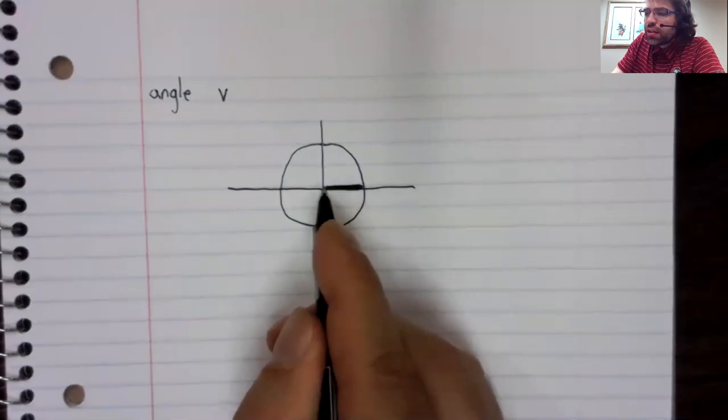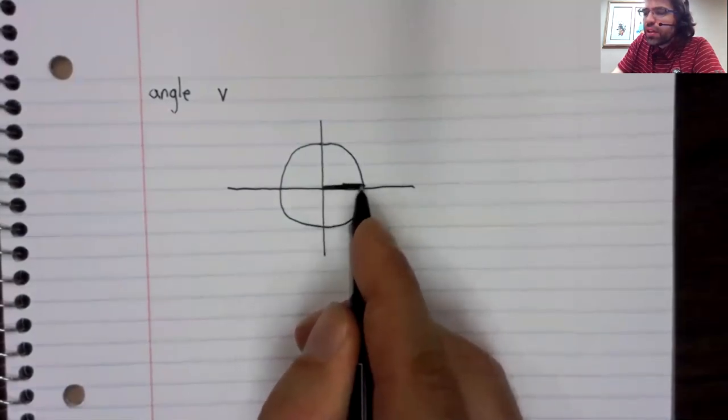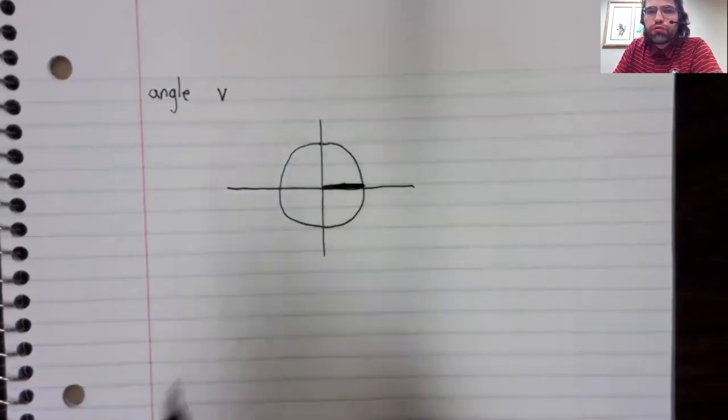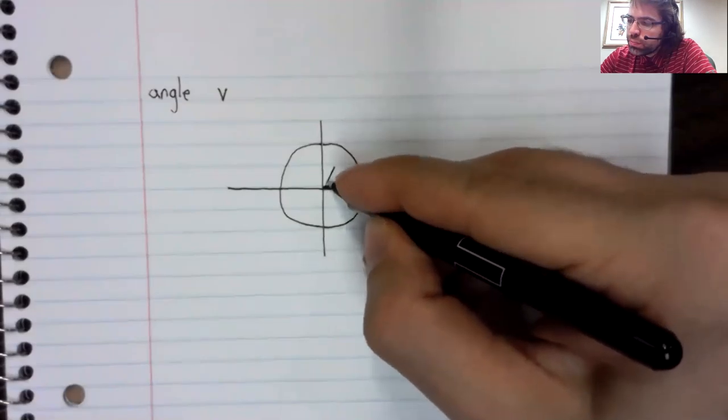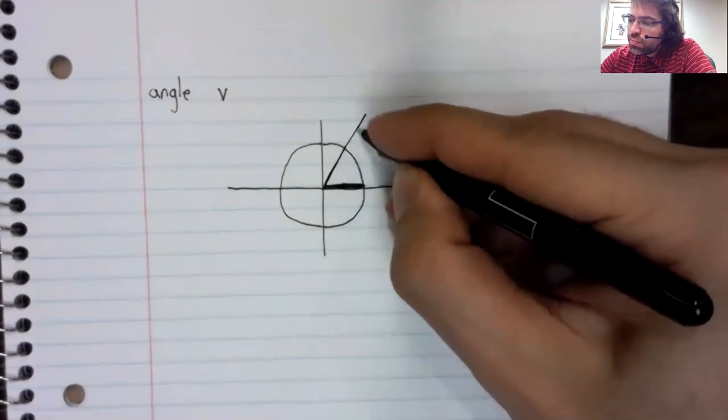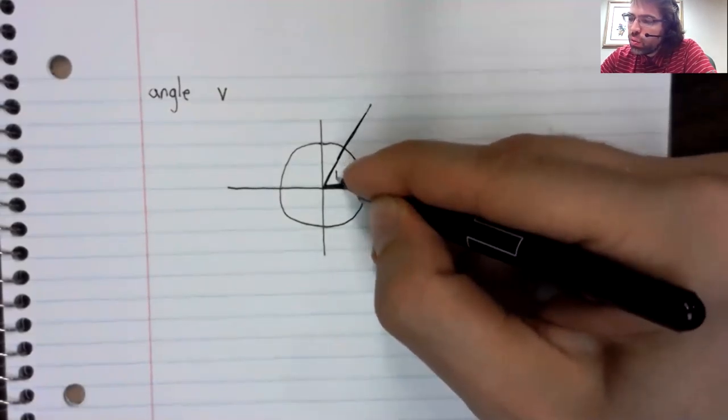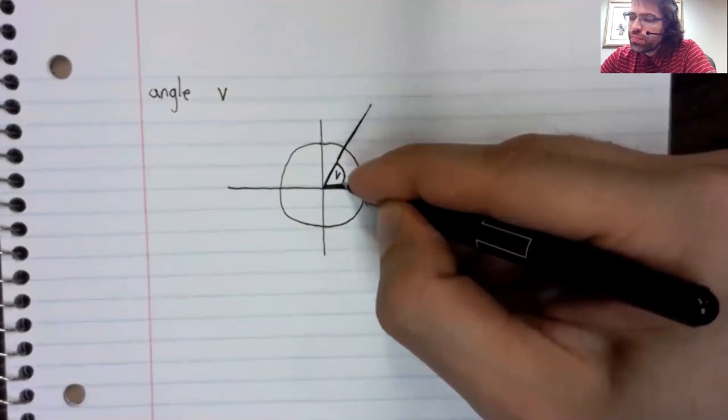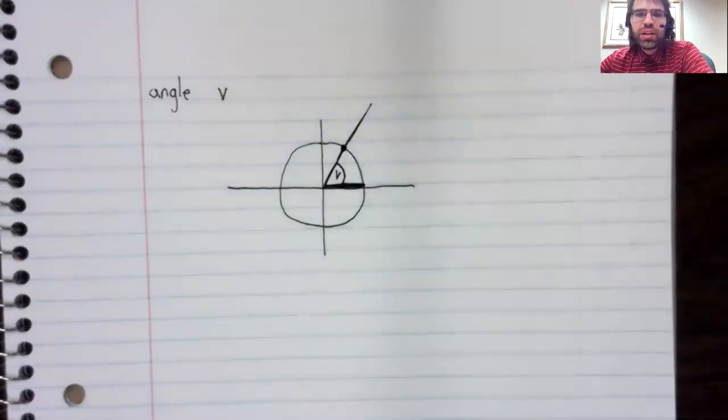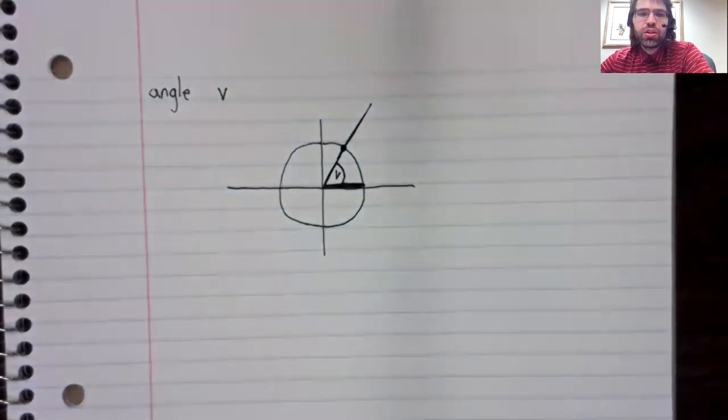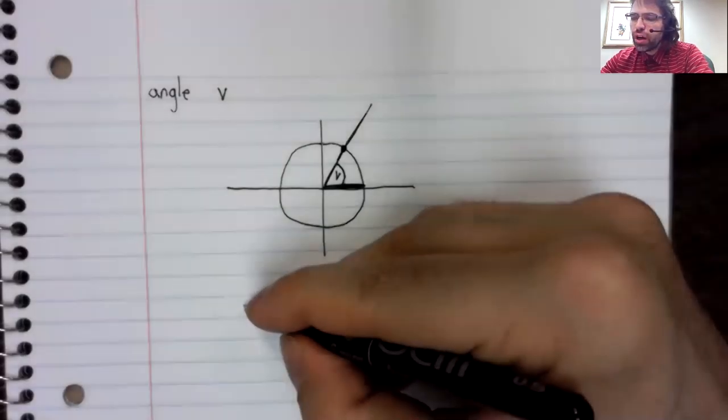If you take the x-axis as one ray forming the angle and you form an angle V, that uniquely determines a point on the unit circle. And we're going to use this relationship to define two functions.